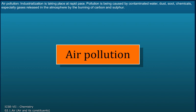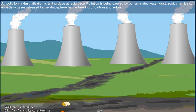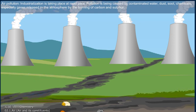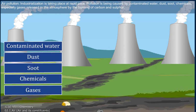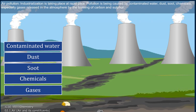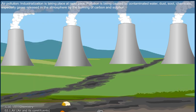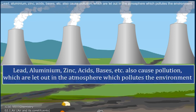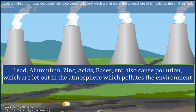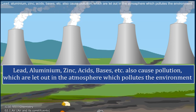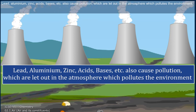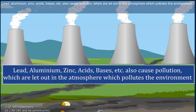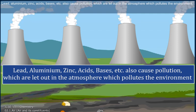Industrialization is taking place at a rapid pace. Pollution is being caused by contaminated water, dust, soot, chemicals — especially gases released into the atmosphere by the burning of carbon and sulfur — as well as lead, aluminum, zinc, acids, bases, etc. These pollutants let out into the atmosphere contaminate the environment.